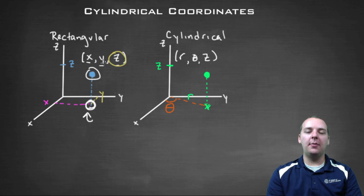So instead of x, comma, y, comma, z, we're going to have r, comma, theta, comma, z.